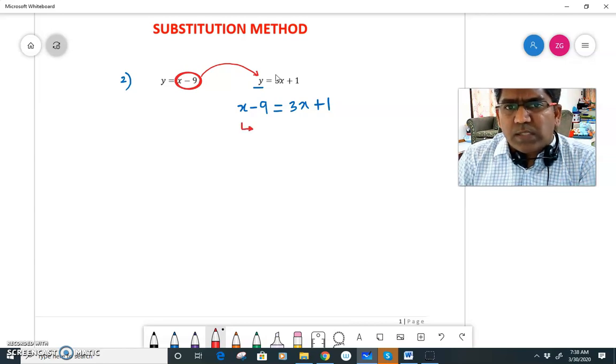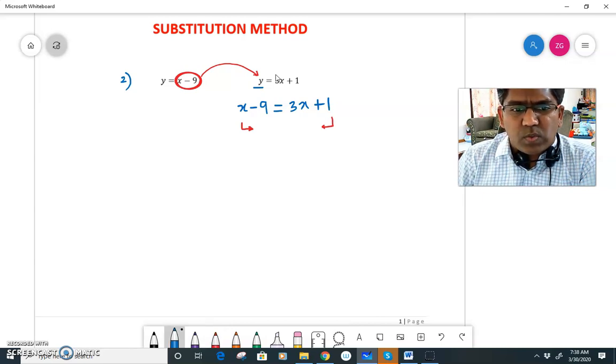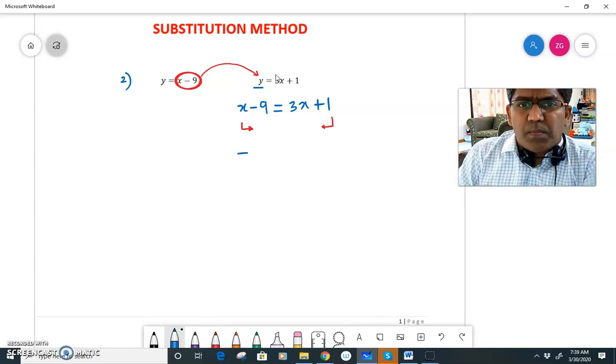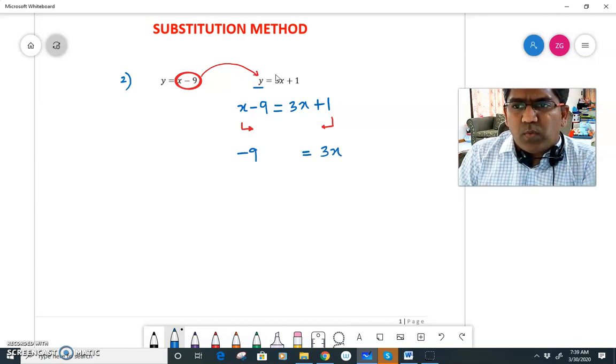So x terms are coming to the right, so I'll shift 1 to the left. So on my left I have minus 9, and on this side I have 3x plus 1. When you shift it to the left it will become minus 1, and plus x when you move it to the right, it will become minus x.